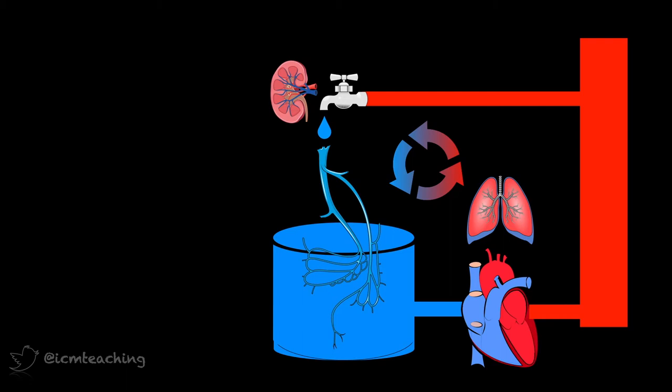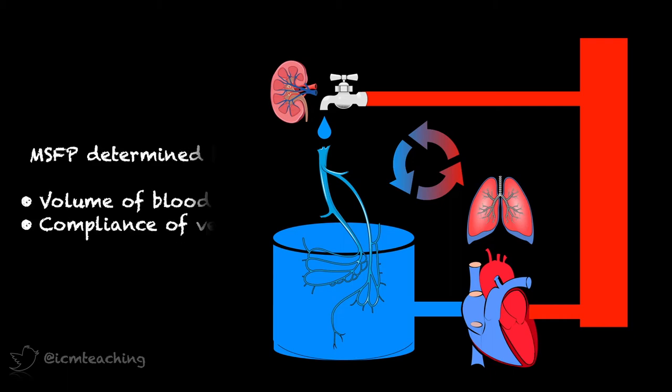How the blood gets back to the heart needs some explaining. Our venules are compliant and store some of the potential distending energy from the heart. Blood flow back to the heart from the veins, which we call venous return, is driven by this elastic recoil pressure. Just like the pressure in a tyre is a measure of its fullness, the pressure in the veins, termed mean systemic filling pressure, is a measure of the fullness of the circulation, and of course also depends on the compliance of the veins. And this pressure is usually around 7 mmHg.